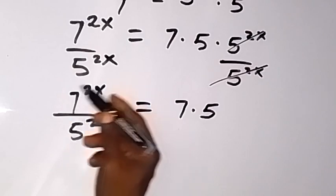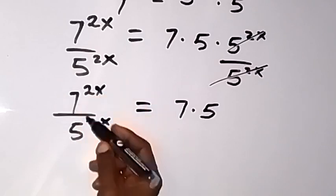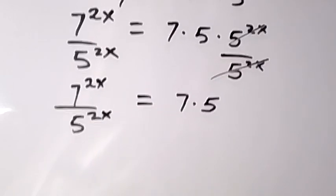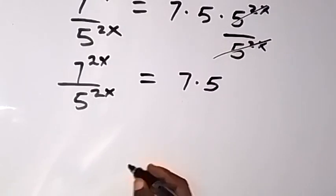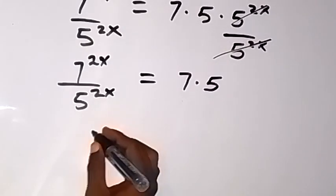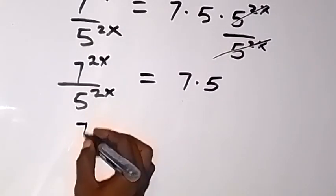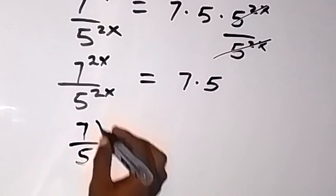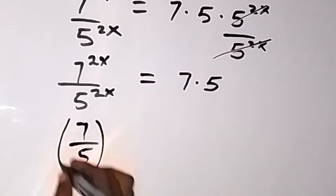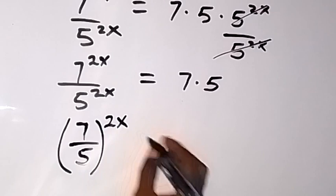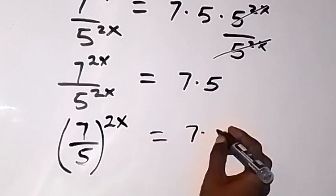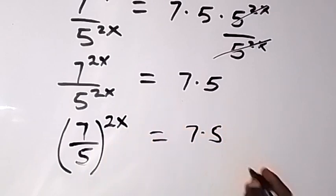Applying the law of indices, we can bring 2x outside the brackets since the powers are the same, and we say this is 7 over 5 all raised to power 2x, which equals 7 times 5.